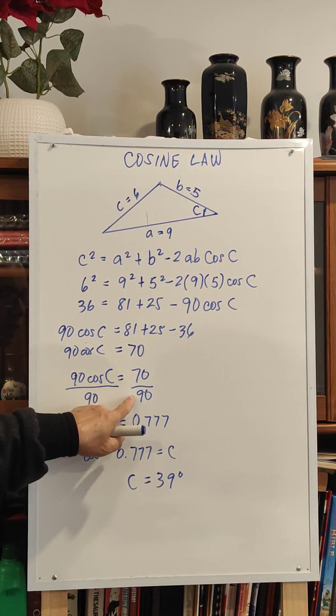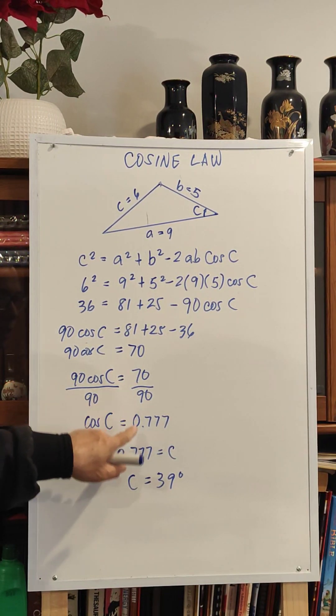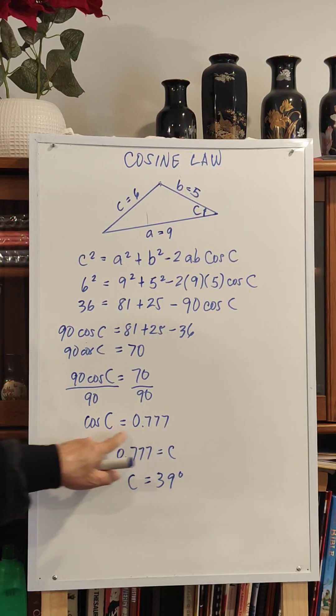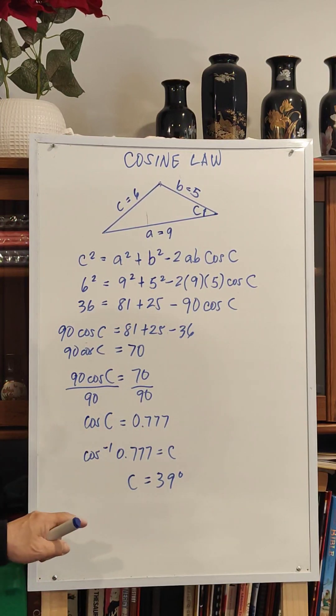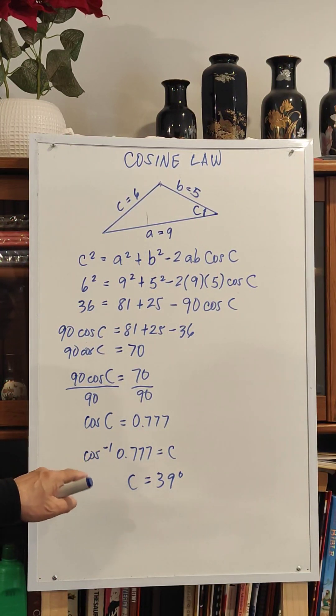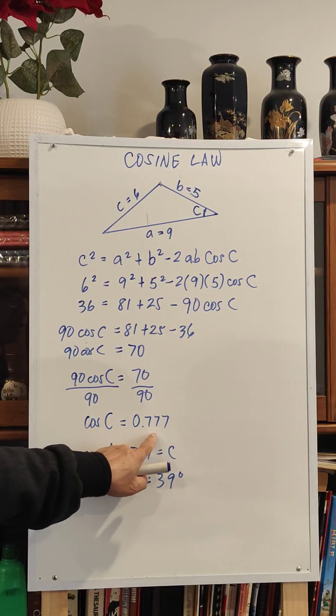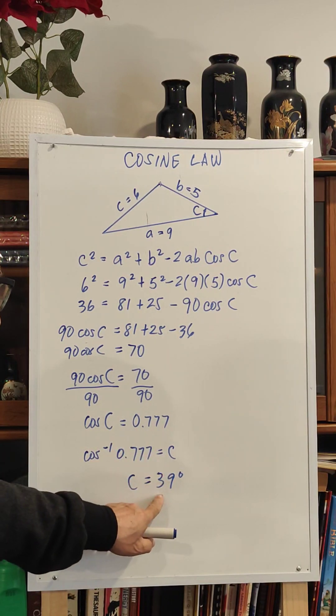70 divided by 90 is 0.777, which is cosine C. To get the angle, we need to get the inverse cosine of 0.777 to get 39 degrees.